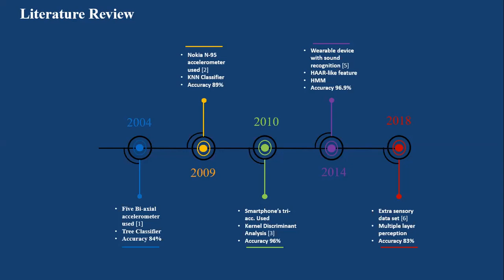In 2014, wearable devices with sound recognition system were used for human context recognition. Heart-rate-like features were used with hidden Markov model classifier and they achieved accuracy of 96.9 percent. In 2018, researchers used extrasensory app to acquire data from different sensors of smartphone and they used multiple layer perceptron data acquisition techniques to achieve accuracy of 83 percent.